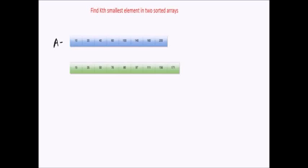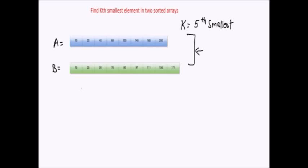Let's take array A and array B as our example, and ask for k equals 5 — that means the fifth smallest element in these two arrays. If I combine these two arrays, what will be the fifth smallest element? One brute force solution is to combine these two arrays and find the kth smallest element.